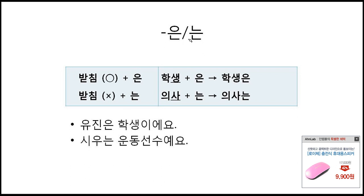Second: 은/는. 은/는 is a subject particle which is attached after the subject of the sentence. Before 은/는, a noun is always placed. When there is an ending consonant in the last syllable of the previous noun, 은 is attached. When there is no ending consonant, 는 is attached. For example: 학생은 — ending consonant, so 은 is attached. 의사는 — no ending consonant, so 는 is attached.